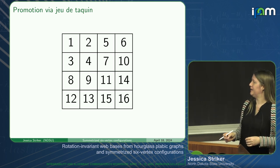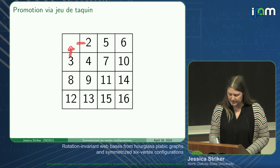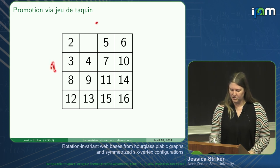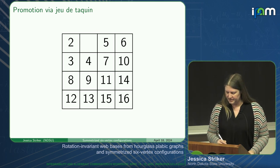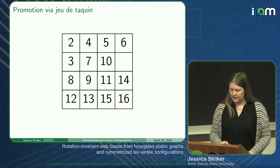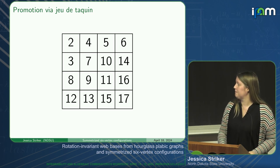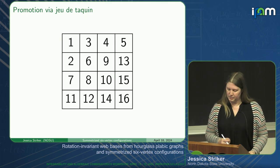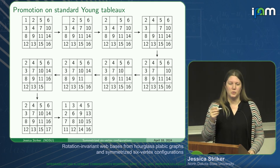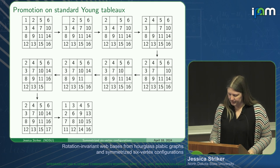One thing that will be very important is promotion—an algorithm that many people are familiar with. We delete the one, and then we ask ourselves which of these two numbers should move into this box. The answer is the smaller of the two, because you don't want a three before a two in a standard Young tableau since rows and columns must be strictly increasing. We keep asking which number from the right or from below should move into the box, until our box ends up at an outer corner, then fill that outer corner with the next biggest number and subtract one from everything.